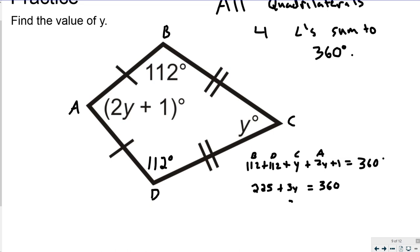If I subtract 225 from both sides, I get 3Y is equal to 135. So then I'm going to divide both sides by 3, and I get Y is equal to 45.